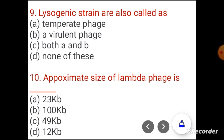Question 9. Lysogenic strains are also called: temperate phage, avirulent phage, both A and B, or none of these. The correct answer is both A and B.